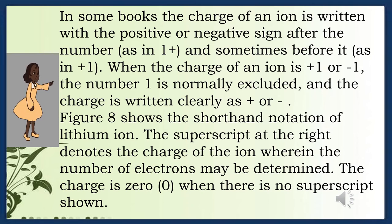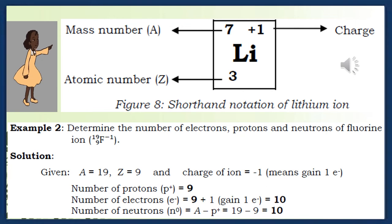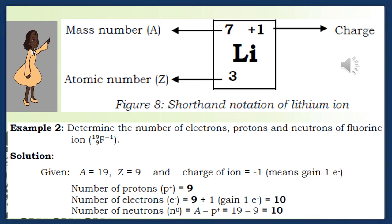Figure 8 shows the shorthand notation of lithium ion: mass number A = 7, charge positive 1, atomic number Z = 3. The superscript at the right denotes the charge of the ion. Example 2: Determine the number of electrons, protons, and neutrons of fluorine ion F-19-9 with charge negative 1. Given: A = 19, Z = 9, charge = negative 1 (meaning gained 1 electron). Number of protons p⁺ = 9. Number of electrons e⁻ = 9 + 1 = 10. Number of neutrons n⁰ = A minus p⁺ = 19 minus 9 = 10.